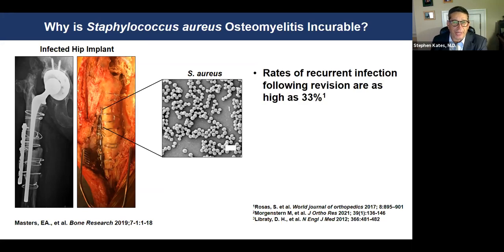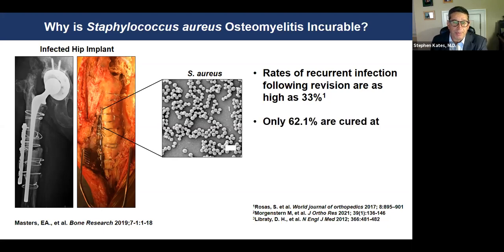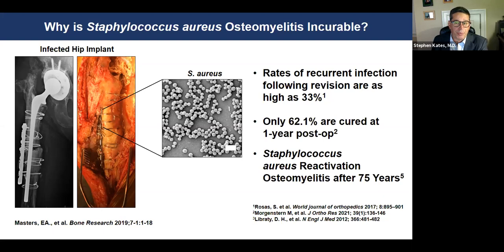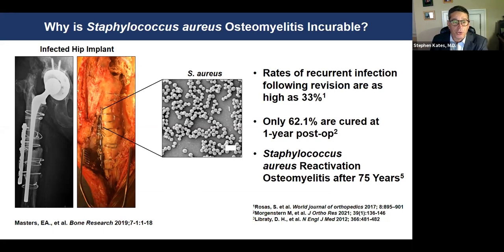The rates of recurrent infection after revision are really high — about 33%. People who say you can get these down to one or two percent, I don't think are dealing with a tough revision practice. Maybe 62% of them are cured at one year post-op, and they frequently reactivate even years later. We've all heard of cases where someone had a staph infection as a child, and then we see them as an older adult with a recurrence — and it's penicillin-sensitive staph, so we know it's the old bug.